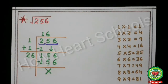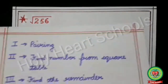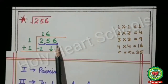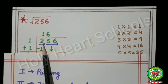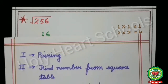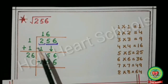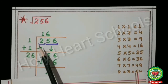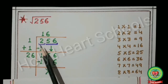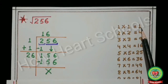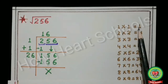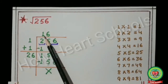Let's start with the first example: square root of 256. Before starting the calculation, write down the square table from 1 to 9 on the right-hand side. The first step is pairing from the back: 56 is the first pair, 2 is one digit left so leave it as it is. The next step is to find a number from the square table equal to or just less than the first digit 2. From the square table, 1 is just less than 2, and 1 is the square of 1, so write 1 at the place of divisor and quotient.